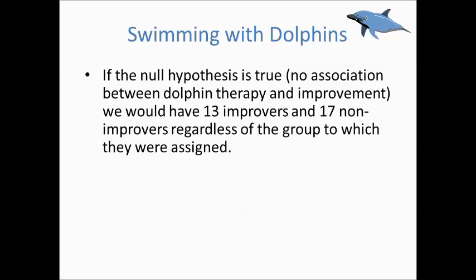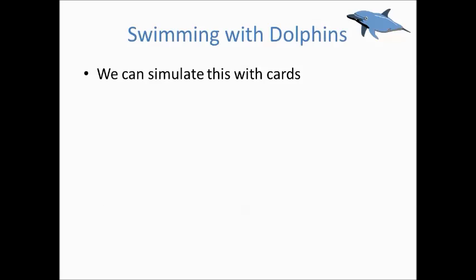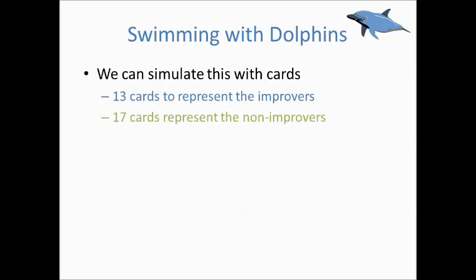Now let's think about how we're going to set up our simulation. If the null hypothesis is true, then the dolphin therapy is no more effective than the control therapy, and we were going to have 13 improvers and 17 non-improvers, regardless of which group they were assigned. Hence the assignment of the subjects to the groups doesn't matter, and we can just randomly assign the subjects' results to the two groups to see what would happen under a true null hypothesis. We can perform this simulation with index cards. We will let 13 cards represent our improvers, and 17 cards represent our non-improvers.